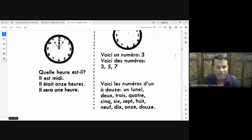Here are the numbers. The number is for singular, the numbers is for plural. The numbers from one, from one to twelve. Voici les numéros d'un à douze. Here are the numbers from one to twelve.